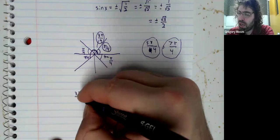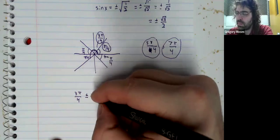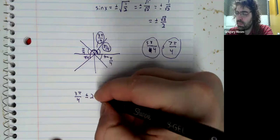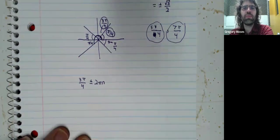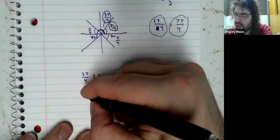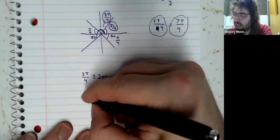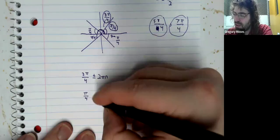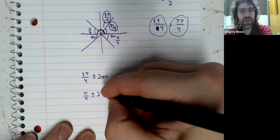So 3 pi over 4 is a solution. So is 3 pi over 4 plus or minus 2 pi n. I'm going to be listing these in a kind of wonky order. I don't know why I started with 3 pi over 4.